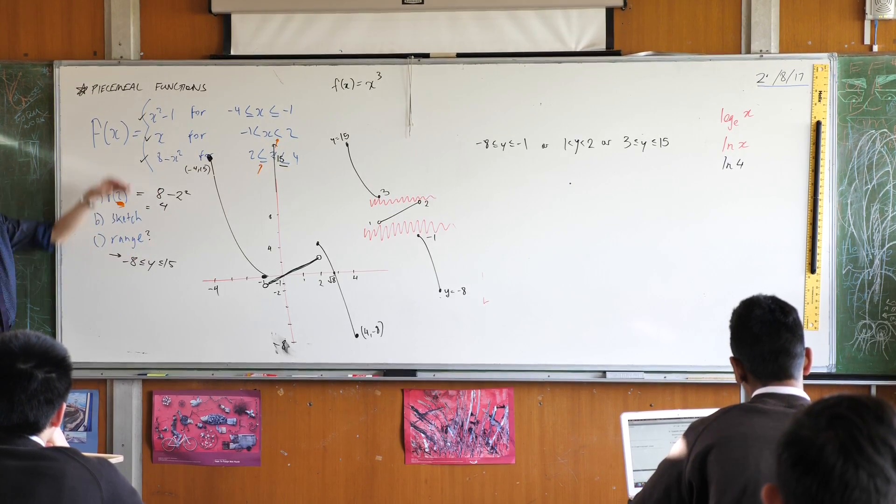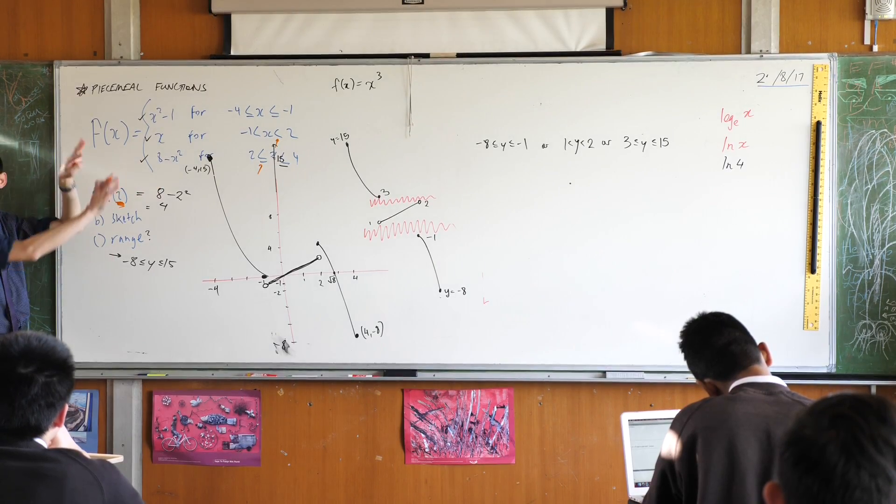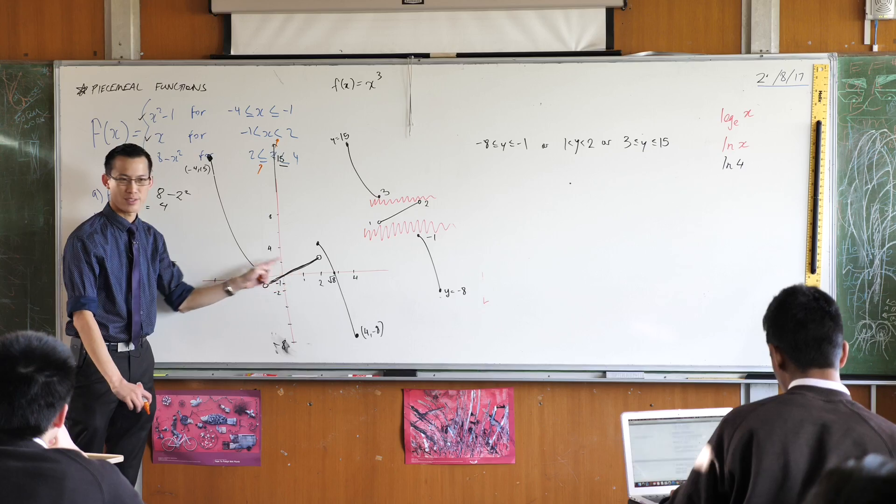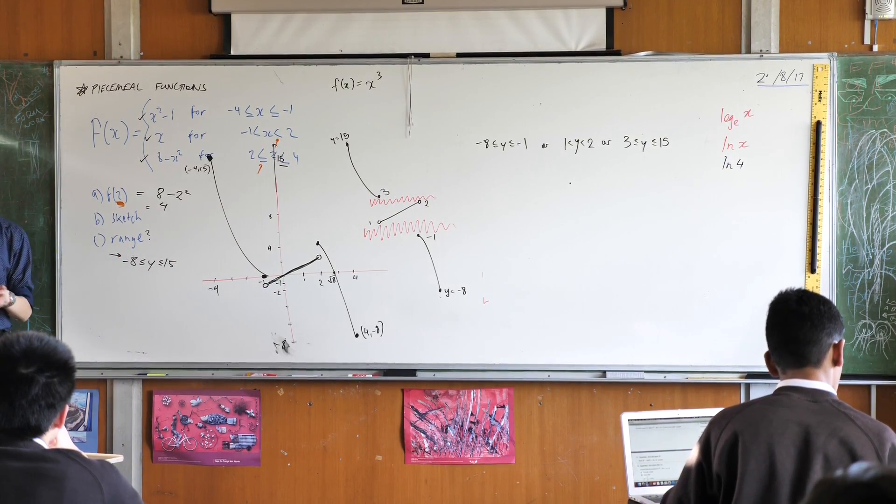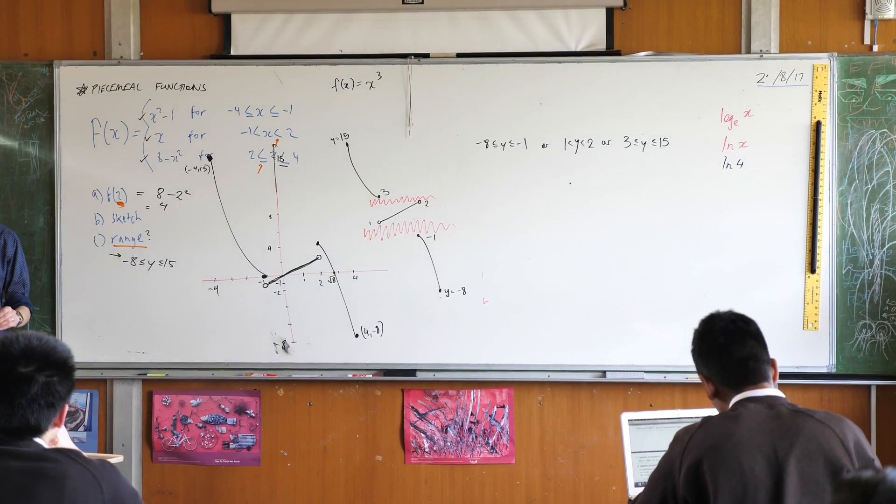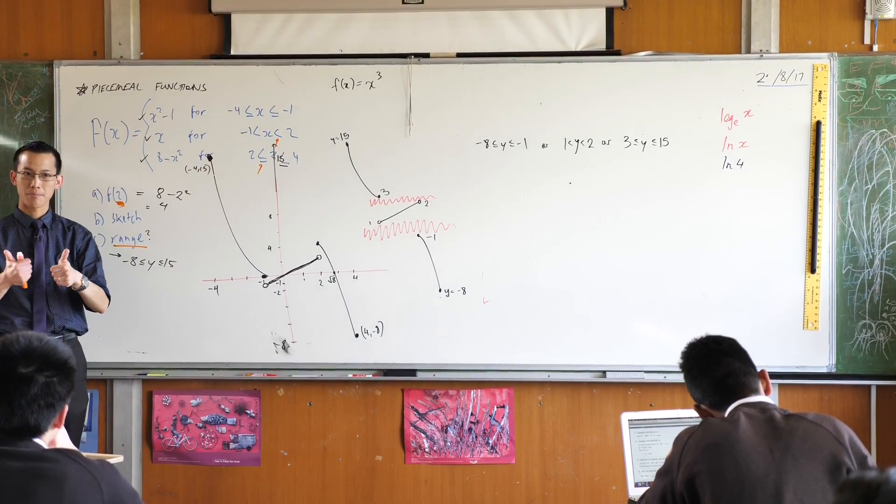When you're asked to sketch, just go one at a time. Don't be intimidated by the fact that it's a long question. Each individual bit is very simple. It's a parabola. It's a straight line. It's a different parabola. No big deal. And then lastly, remember what range means. What are the Y values where actually it can exist? In this case, everywhere between here and here is fair game.